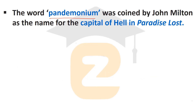The word Pandemonium was coined by John Milton as the name for the capital of hell in Paradise Lost. It refers to the building erected in Paradise Lost, where Satan and his companions were expelled from paradise by God.